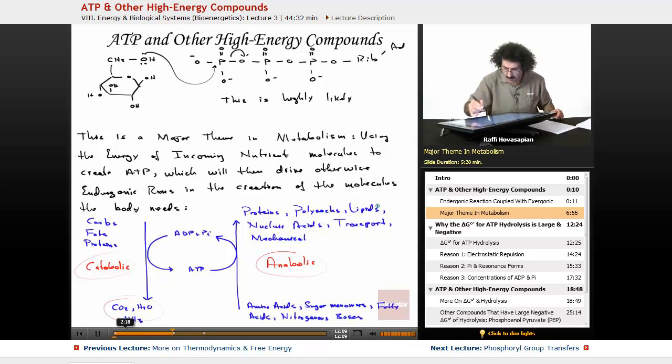This is metabolism. Catabolism, anabolism together are your metabolism. ATP as the primary energy intermediary in this whole process. That's it. Thank you.